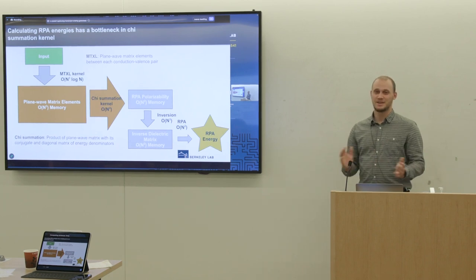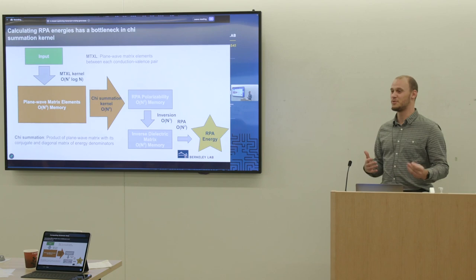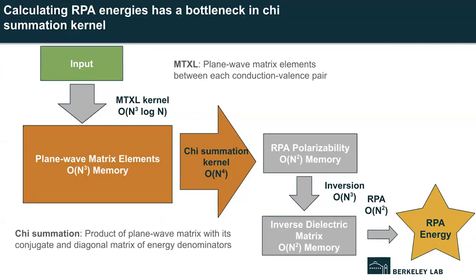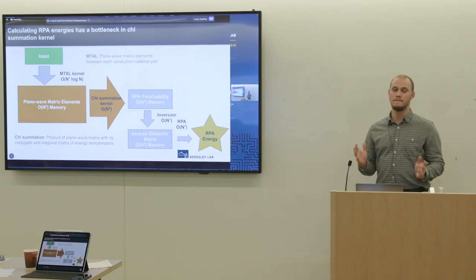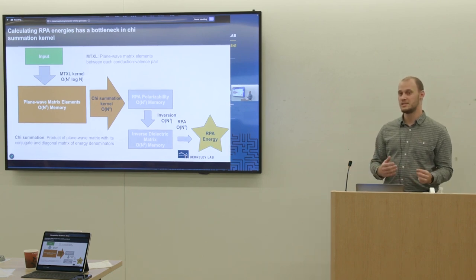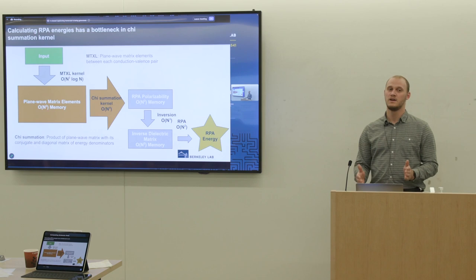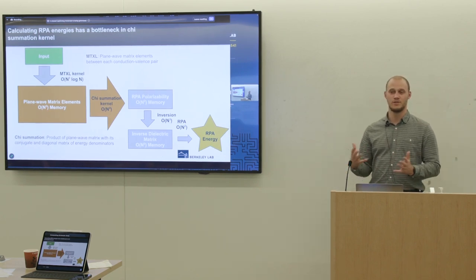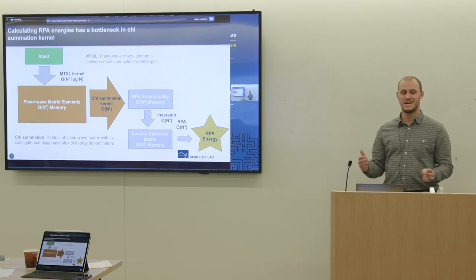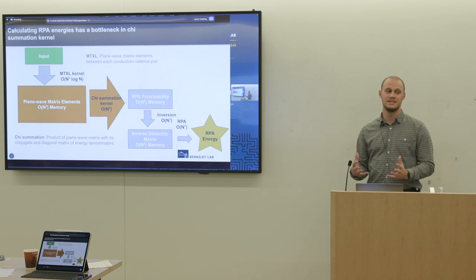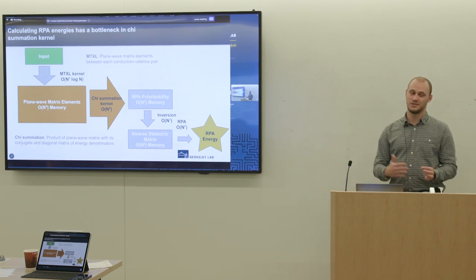Unfortunately, calculating an RPA energy is computationally intensive. Let's walk through what the computational workflow looks like — I've represented the computational kernels with arrows and the data they produce as rectangles, sized based on how they scale with system size. Starting from our input, which is basically a DFT calculation, we use the MTXL kernel, or matrix element kernel, to generate plane wave matrix elements between each pair of conduction (unoccupied) states and valence (occupied) states. Both conduction and valence states scale with system size, so we have N² states.